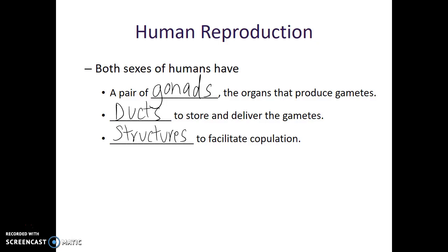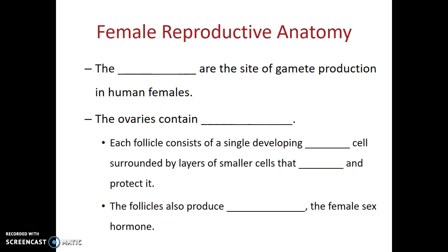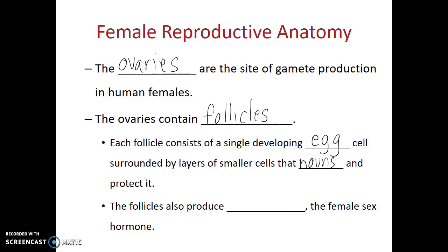The gonads in females are known as the ovaries, and these are the structures that will produce the egg cell. Within the ovaries, there are spherical balls of cells known as follicles. Each follicle consists of a single developing egg cell surrounded by layers of smaller cells that nourish and protect that egg. The follicle is also the source of estrogen, the female sex hormone. So while it's true to say that the ovaries produce estrogen, the follicles are the specific regions within the ovaries making that particular hormone.